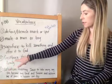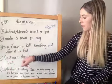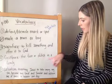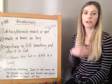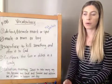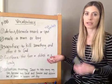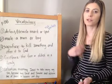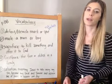Number four: firstborn. It's exactly how it sounds — the first or oldest child in a family. My brother is older than me; he was born first, so he would be the firstborn in our family.